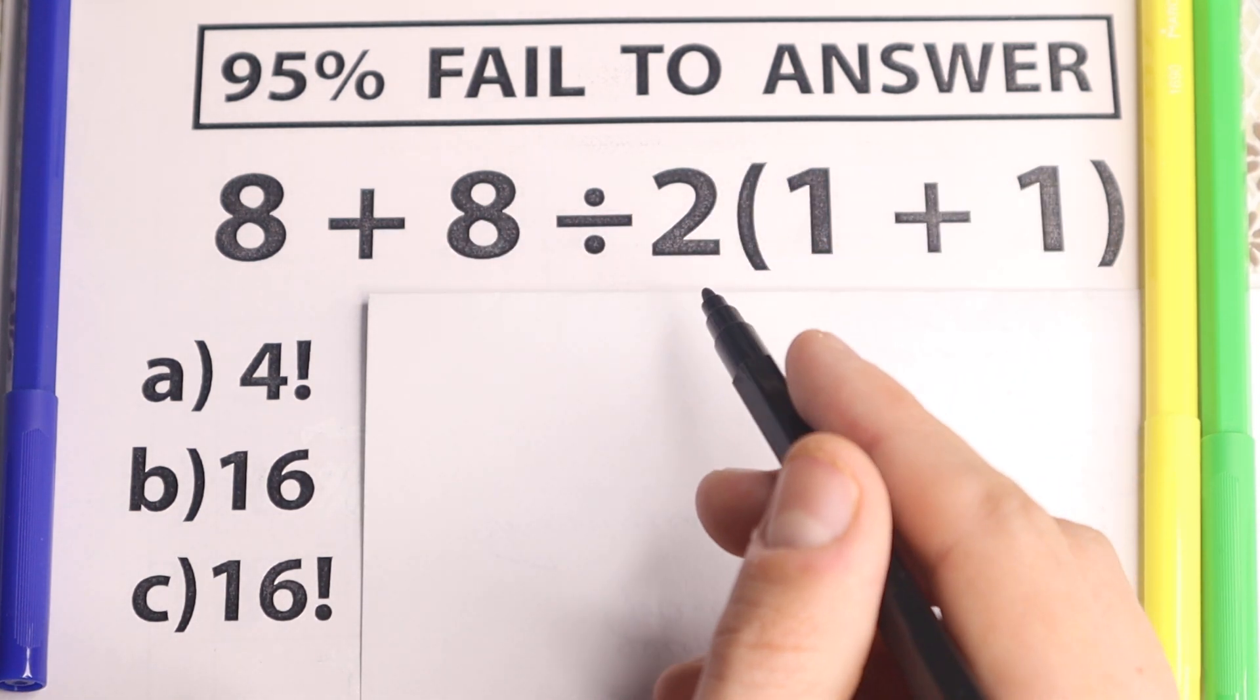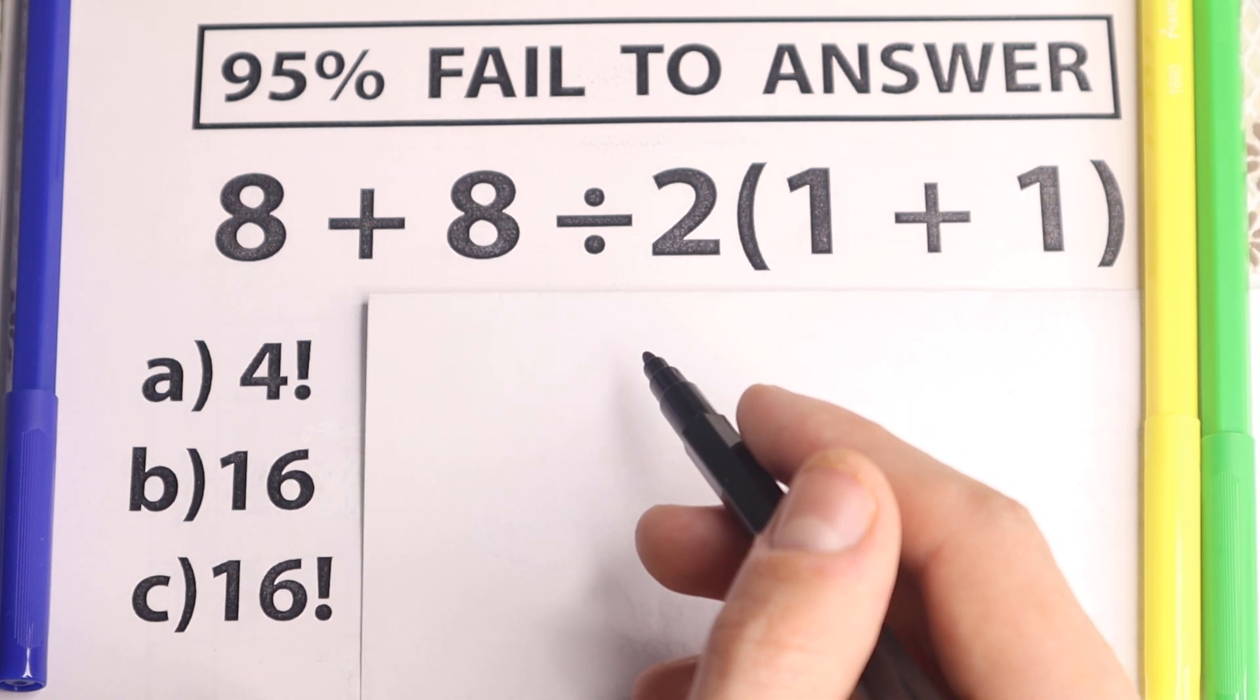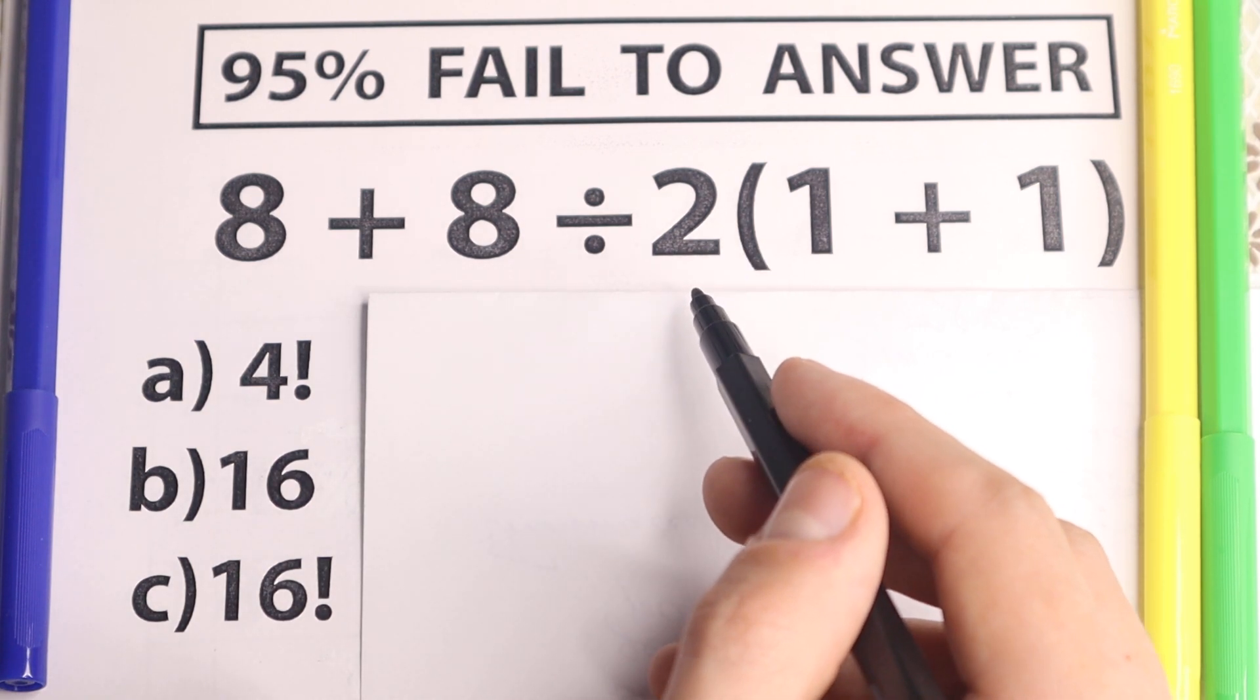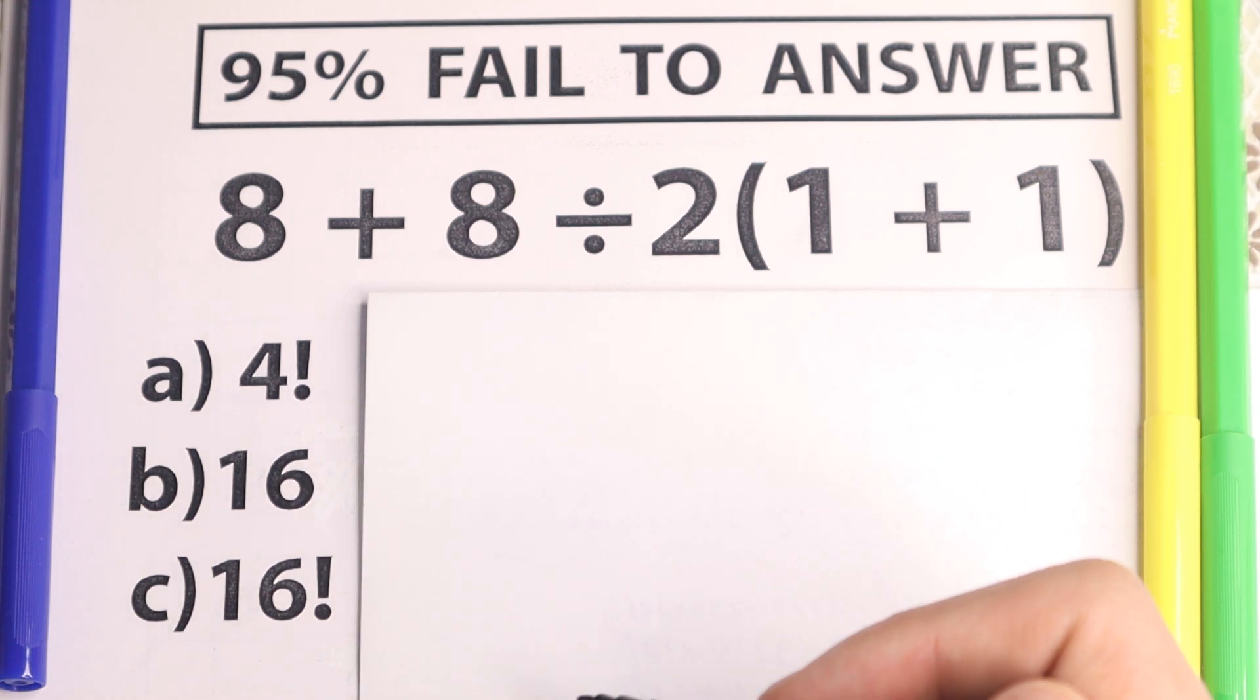As you can see a lot of combinations and a lot of students don't know how to work with this. For this question we need to understand what is the correct order to do this problem. Because obviously whatever order you select is going to create a different answer, right?